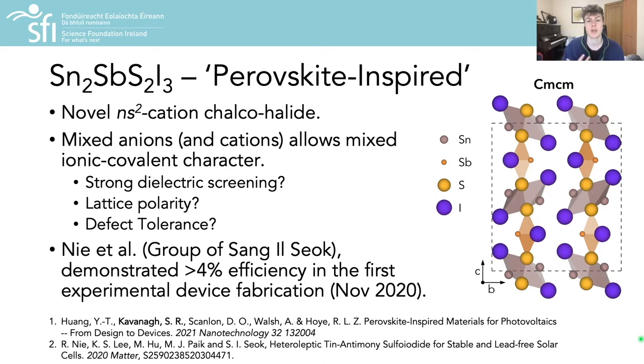Furthermore, the presence of multiple anion and cation species particularly favors mixed ionic-covalent bonding character in these materials, which typically results in strong dielectric screening, which is an effective way of reducing carrier capture by charge defects and thus non-radiative recombination, as well as lattice polarity and other properties associated with defect tolerance. So all these properties are promising signs for the potential application of these materials in optoelectronic devices, but does it actually translate into device performance here?